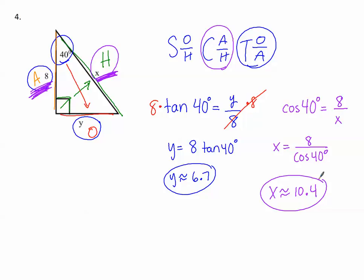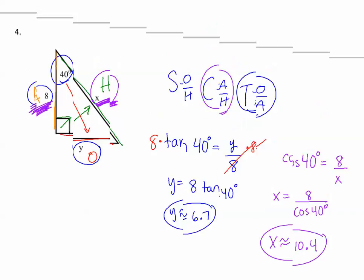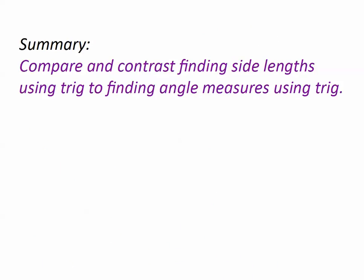Now, always ask yourself, does that make sense? Well, the hypotenuse is supposed to be the biggest. So if this is about 6 and this is about 8, it makes sense that this would be about 10. Remember the triple 6, 8, 10? Now that should make even more sense. Go ahead and take a few minutes to write a summary. Compare and contrast finding side lengths using trig to finding angle measures using trig. Remember in the last section, we used trig to find angle measures. This section, we're using it to find side lengths. What did we do similar, and what did we do differently? See you in class.